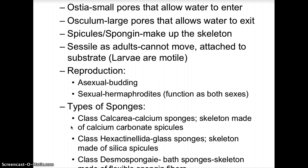Looking at basic anatomy: the ostia are the small pores that allow water to enter the sponge. The osculum is the large pore at the end of the sponge that allows water to exit. The sponge skeleton can be made up of spicules of either silica or calcium carbonate, or it could be made of spongin, which is found in bath sponges — a more flexible sponge fiber.